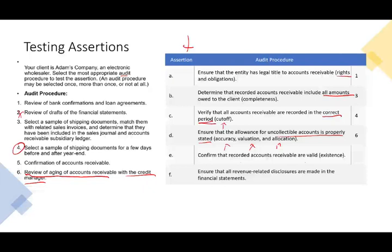Confirm that recorded accounts receivable are valid — which is the existence assertion. Are they really actual sales? The best way to test existence is to send a confirmation to the customers. The customer may or may not respond, and there are alternative procedures if they don't. Confirmation of accounts receivable is the key procedure here. There is positive confirmation, negative confirmation, and alternative procedures when the client doesn't respond. You have to be extremely familiar with confirmation, as it tests existence along with other related steps.